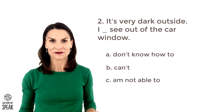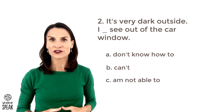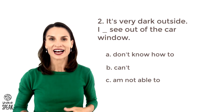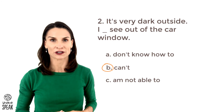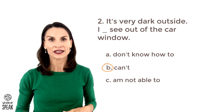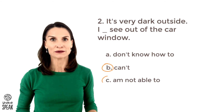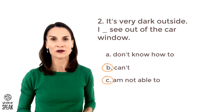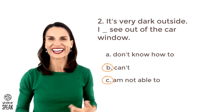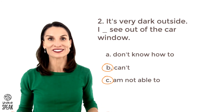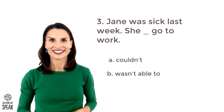Number two: it's very dark outside. I can't see out of the car window. You can also say I'm not able to see out of the car window, but most people will say I can't see out of the window because it's shorter and easier to say.